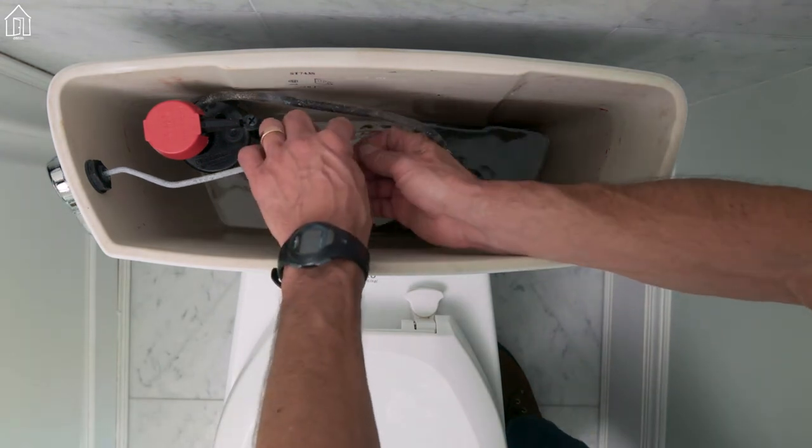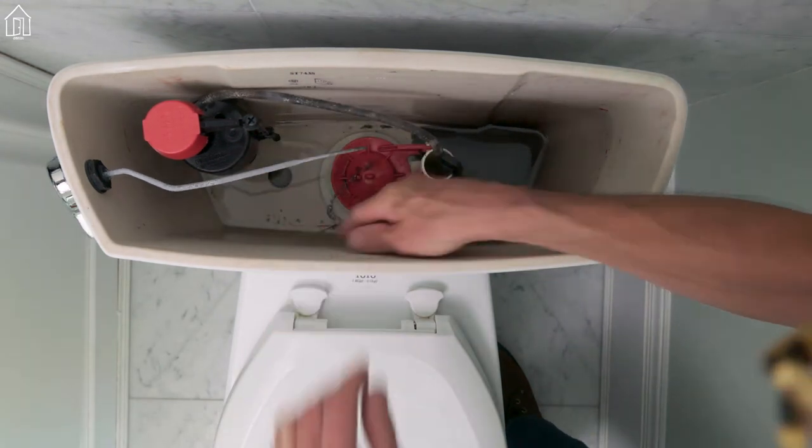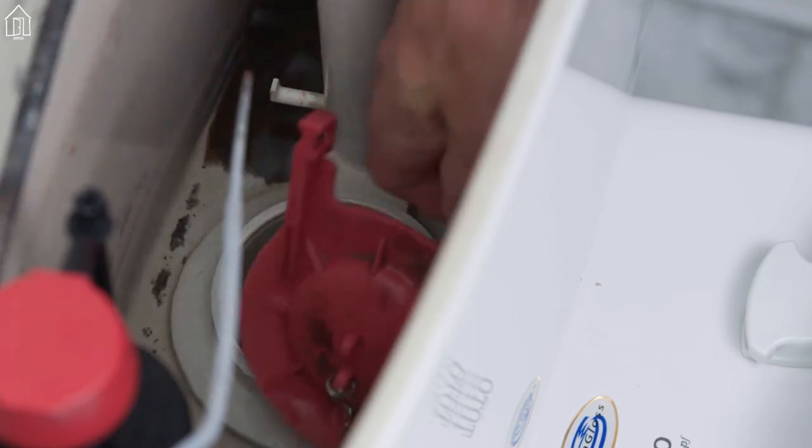Then unhook the chain from the flush handle. Slip off the ears of the flapper.